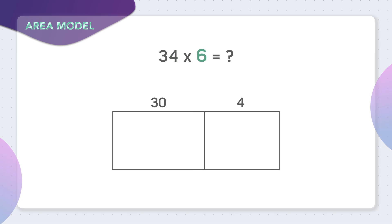Now I'm multiplying all of this by 6, so I will just put the 6 on the side of the area model. Now in this first box on the left, what two numbers am I multiplying? In this box, I'm multiplying 30 times 6.